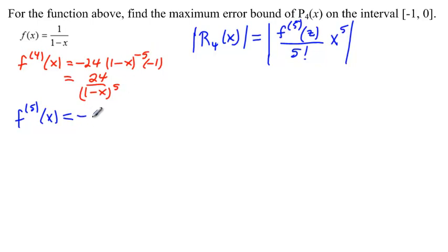You end up with a negative 120 times 1 minus x to the negative 6 times negative 1, which simplifies to 120, positive 120, over 1 minus x to the sixth.